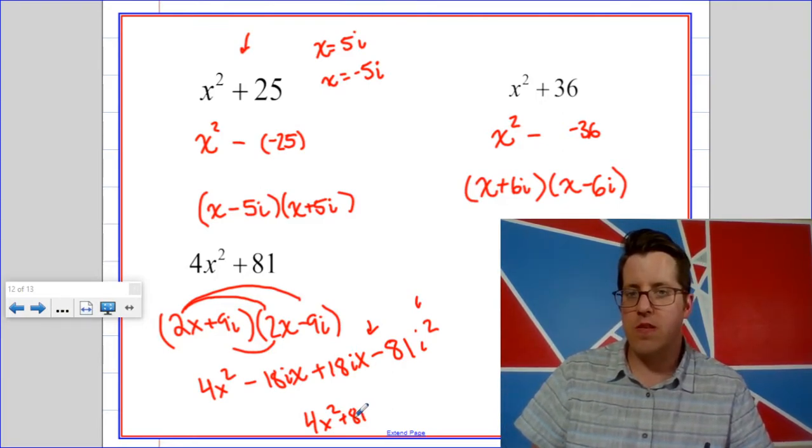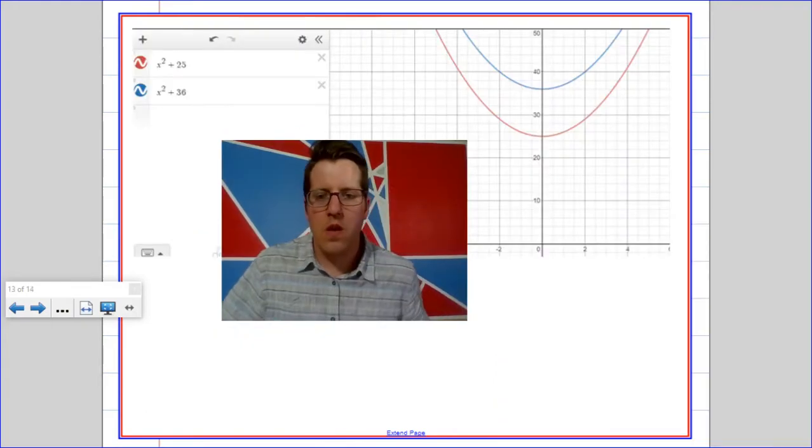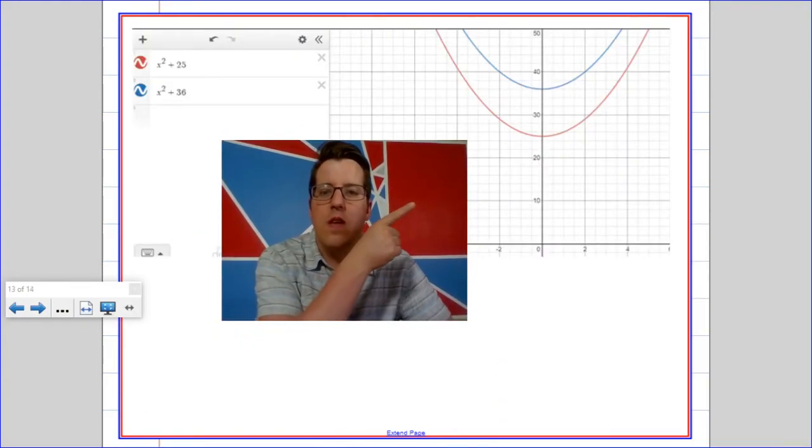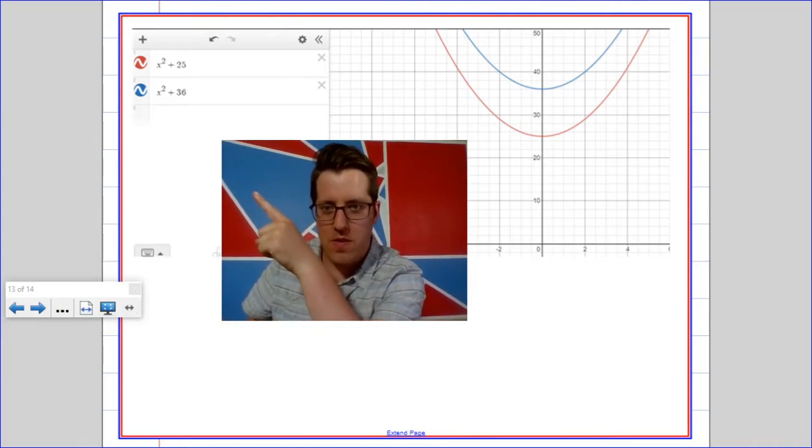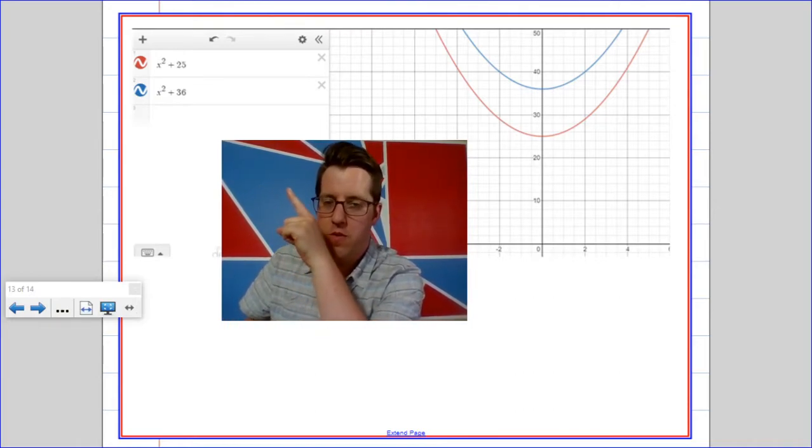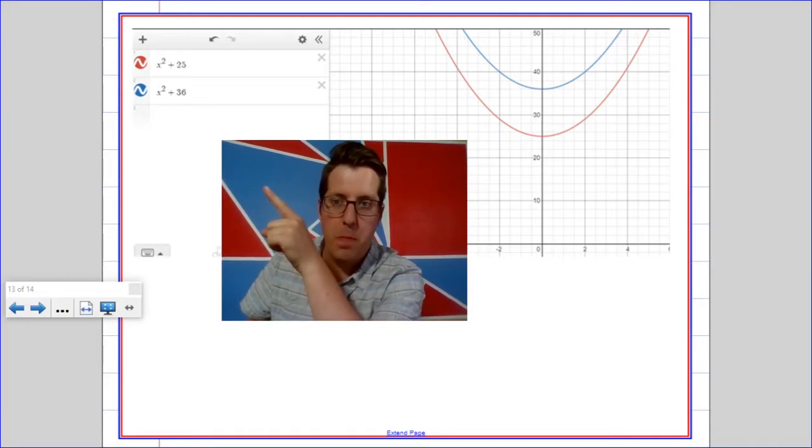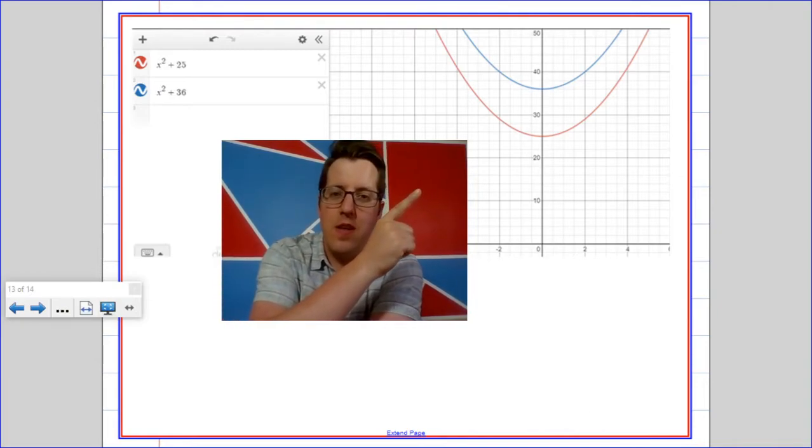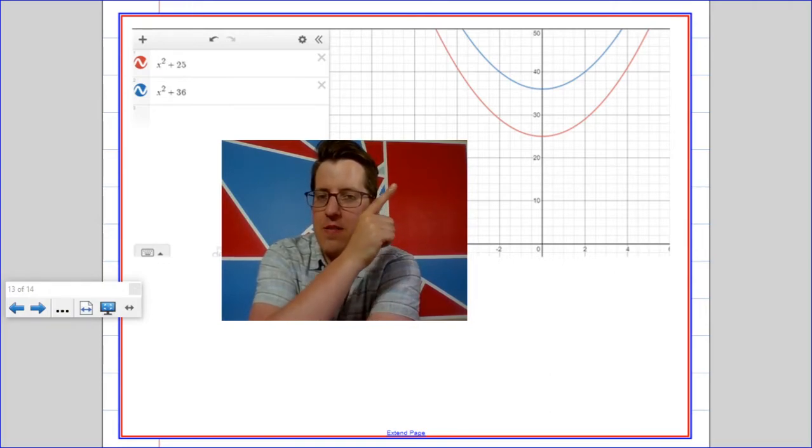Before we do, let's look at some graphs. So just to make sure we're all on the same page, the reason that these equations don't factor in the normal way is because they don't have real zeros. And the way that we can see that on the graph is that they don't cross the x-axis.